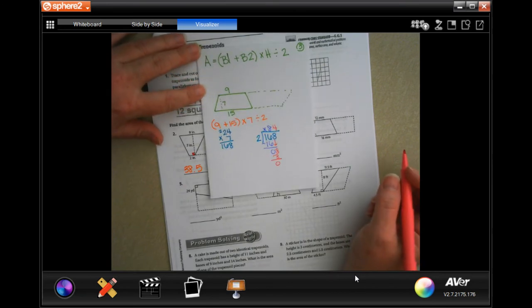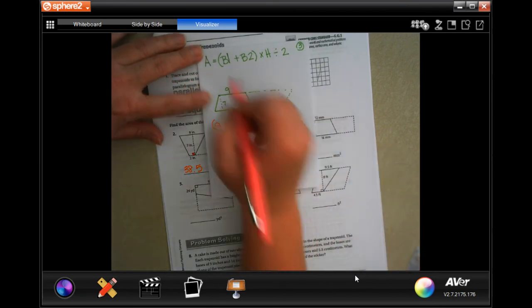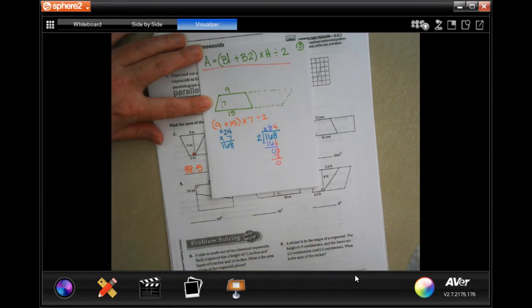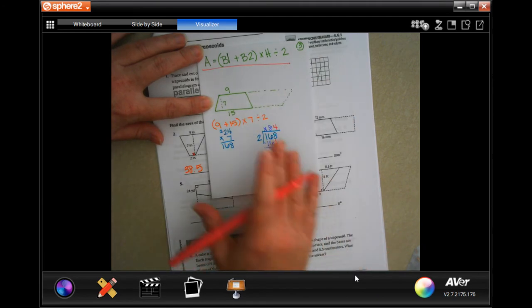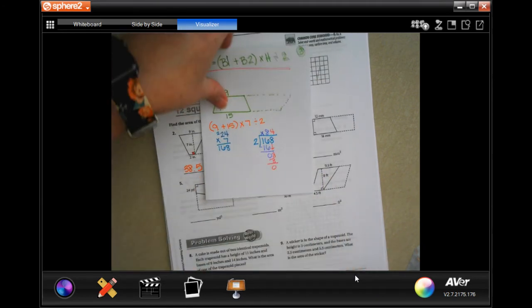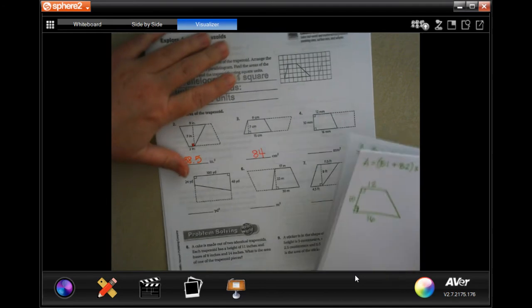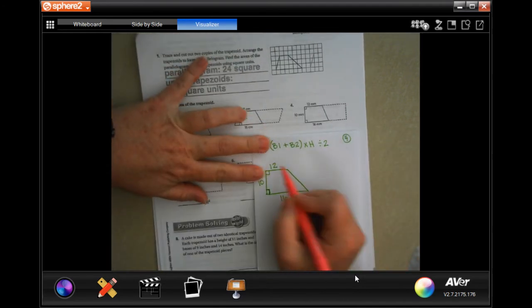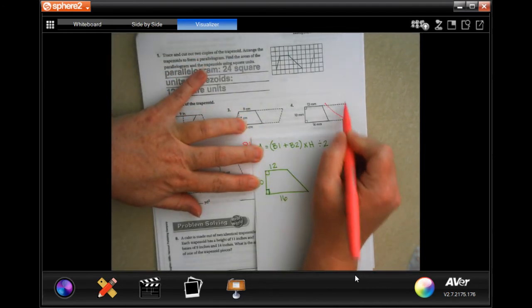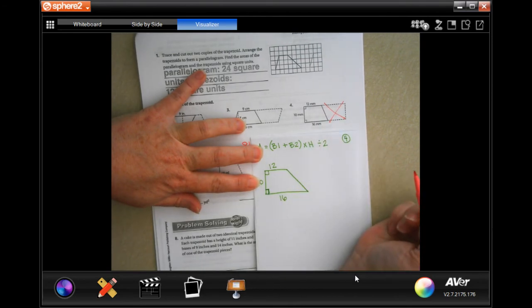It gets easier the more you do it, guys, I promise. You just got to remember that this is the area for a trapezoid. Okay, let's do number 4. So you'll notice that on number 4, all I did was the ones that we have to worry about. I did not draw this. It doesn't matter for what we're doing.